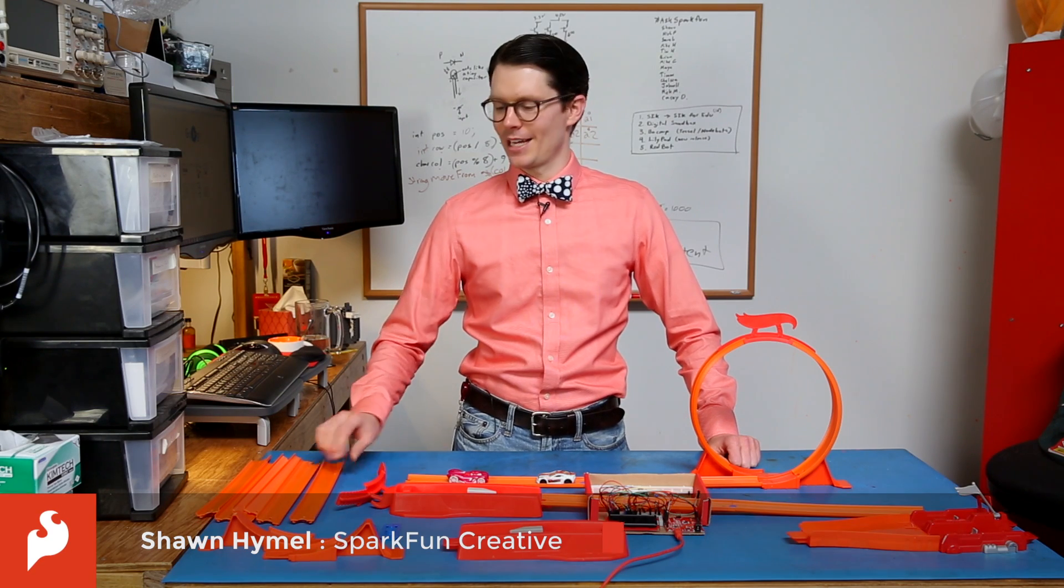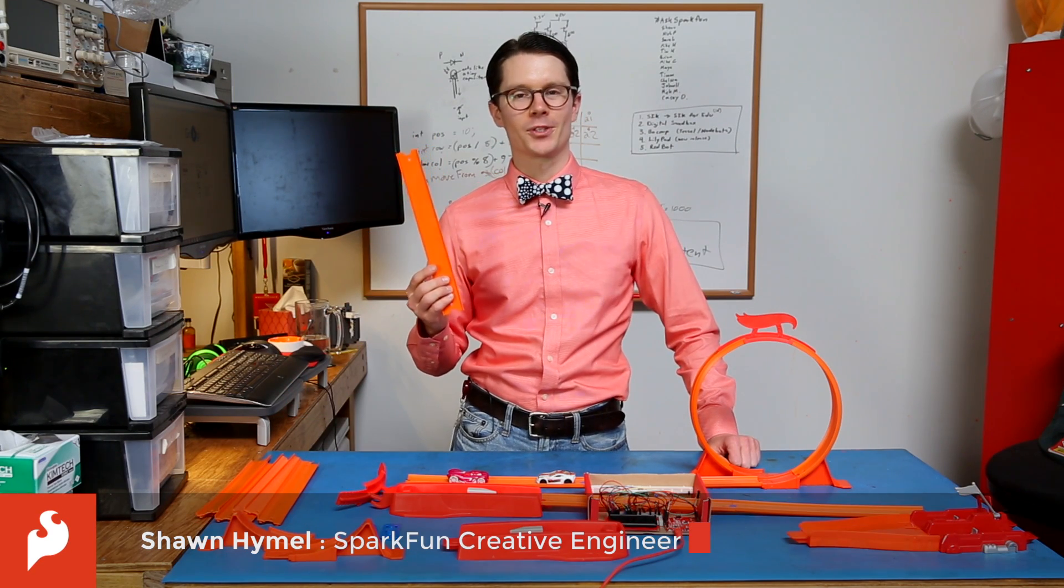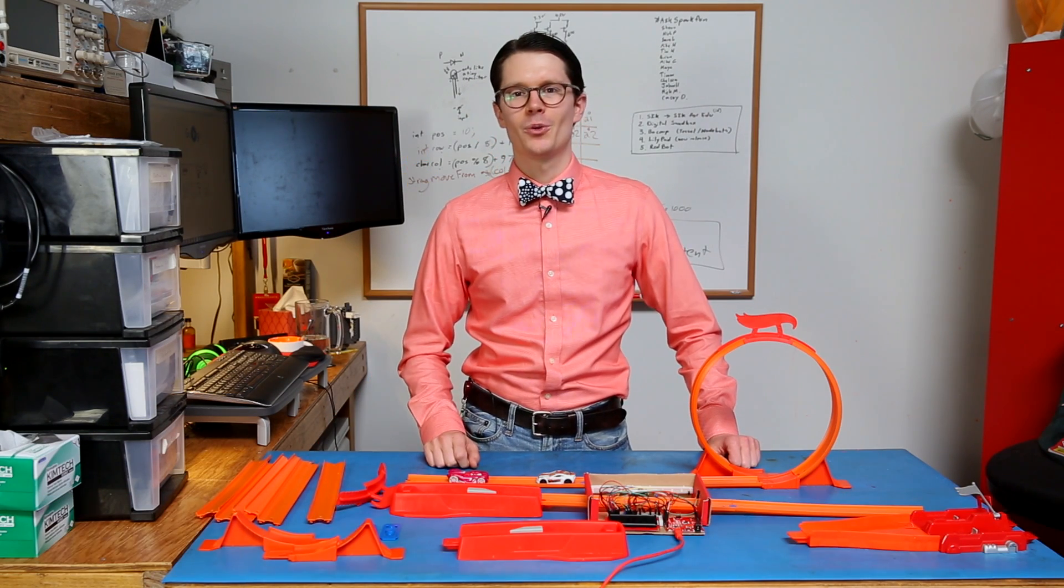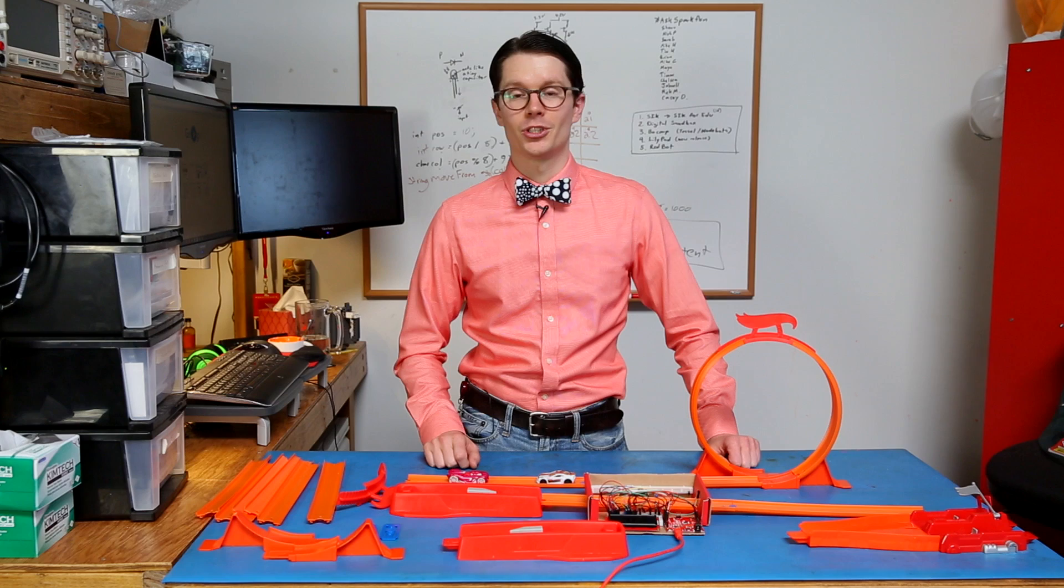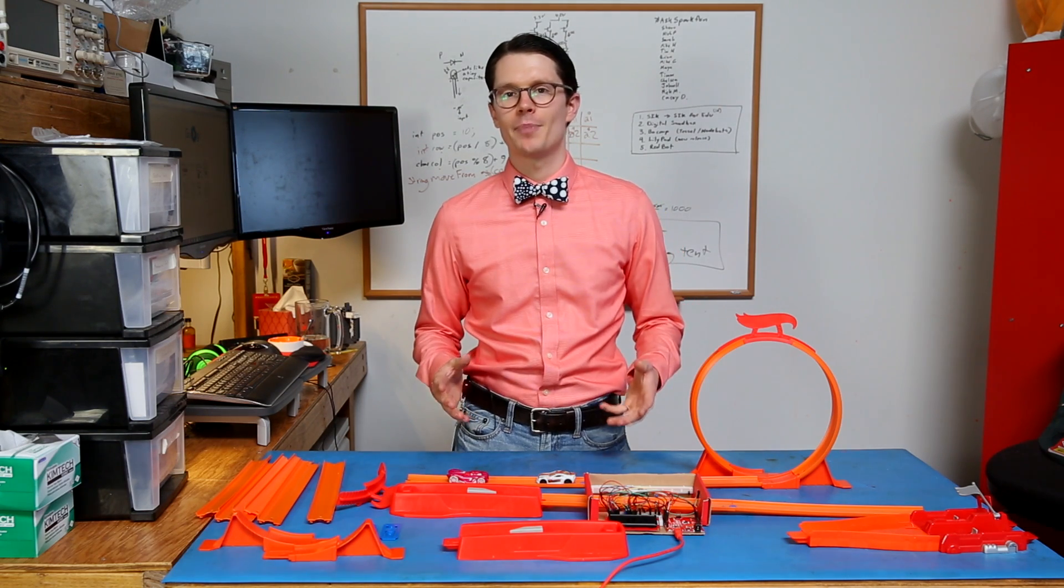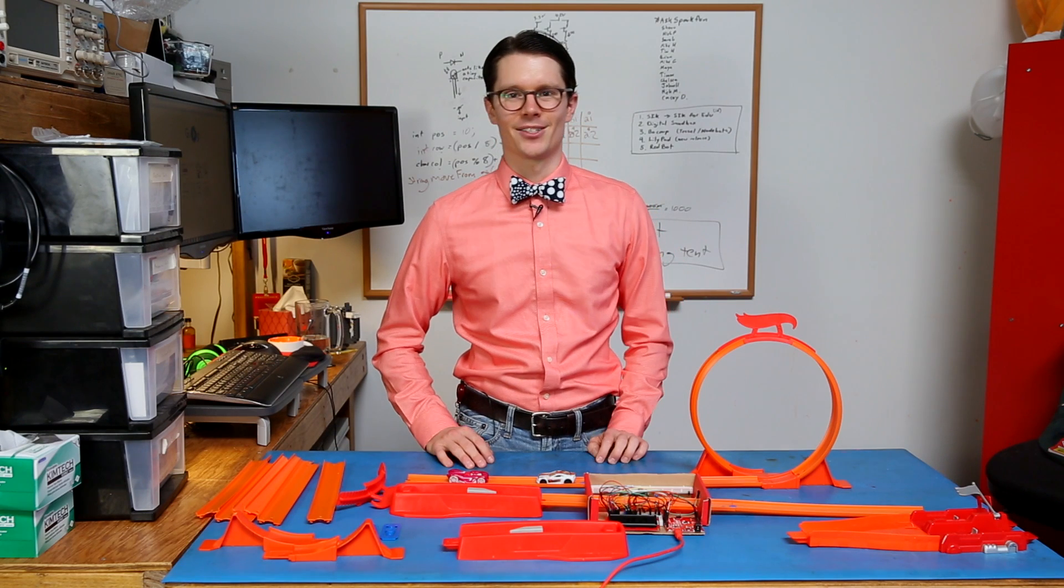Growing up, I fondly remember putting together Hot Wheels tracks to make elaborate courses for my toy cars. And while it was fun to race them, I always thought it would be cool to take a slightly more scientific approach and actually measure how fast they were going. We can build our own chronograph by using an Arduino and a few light sensors.